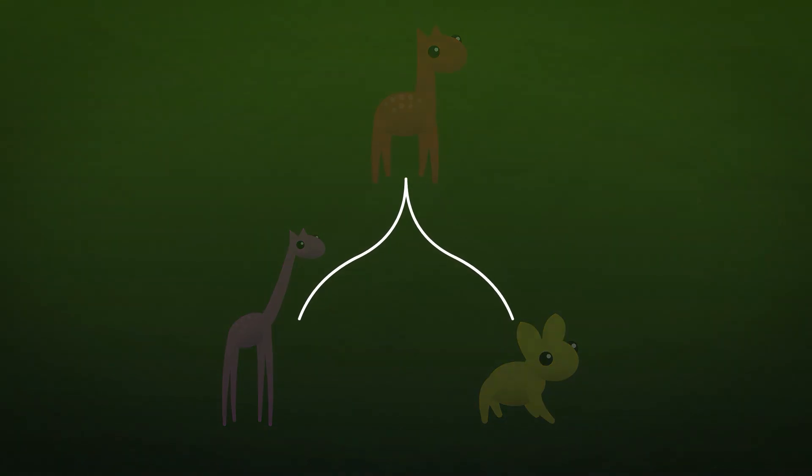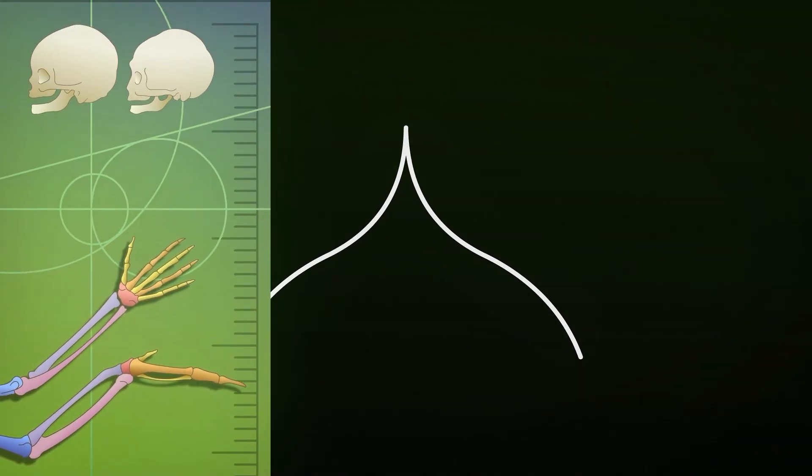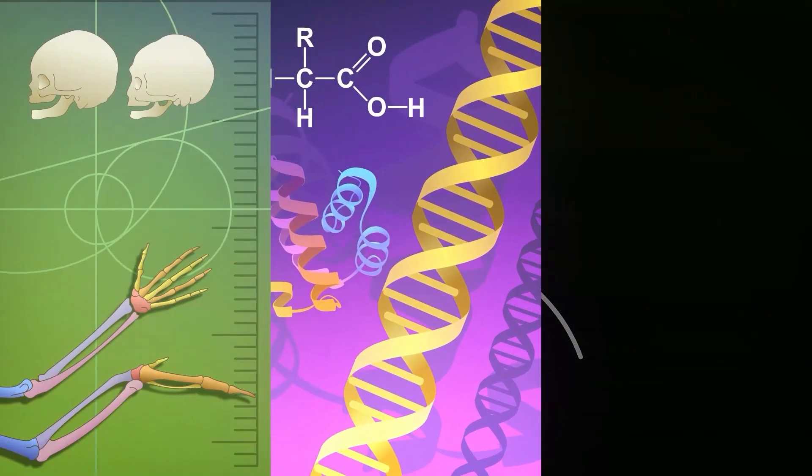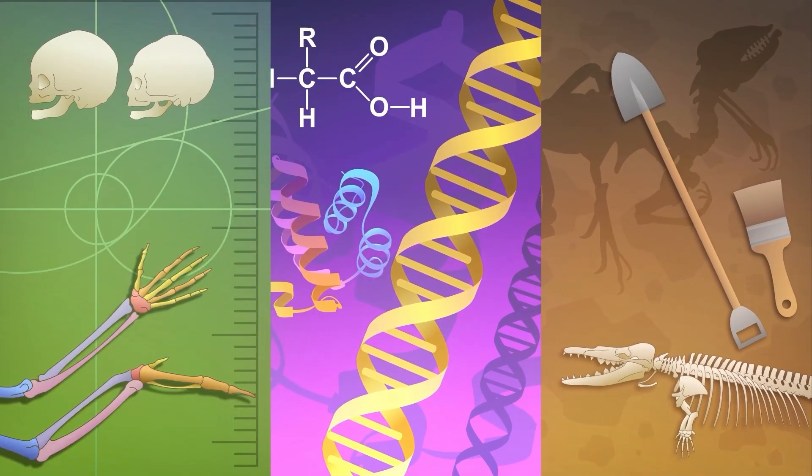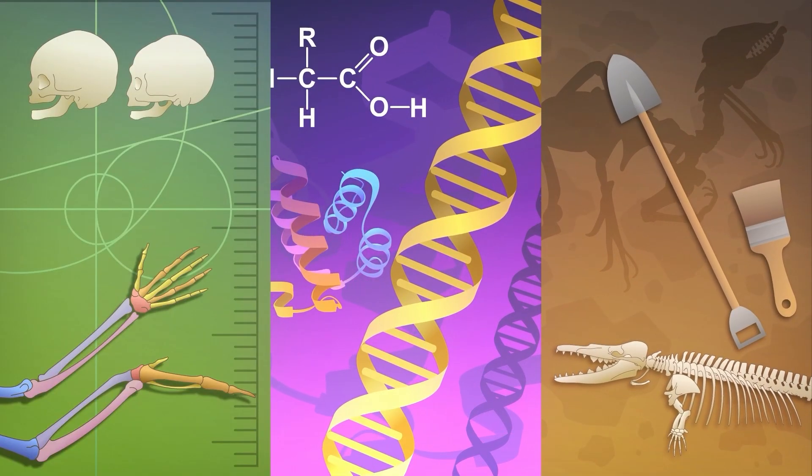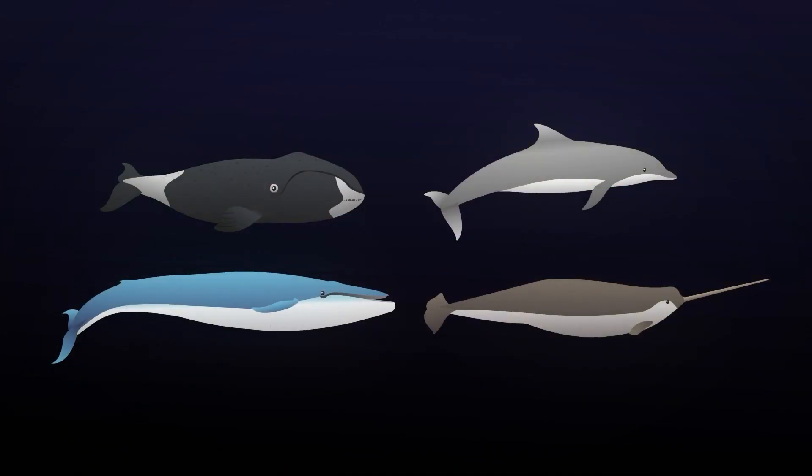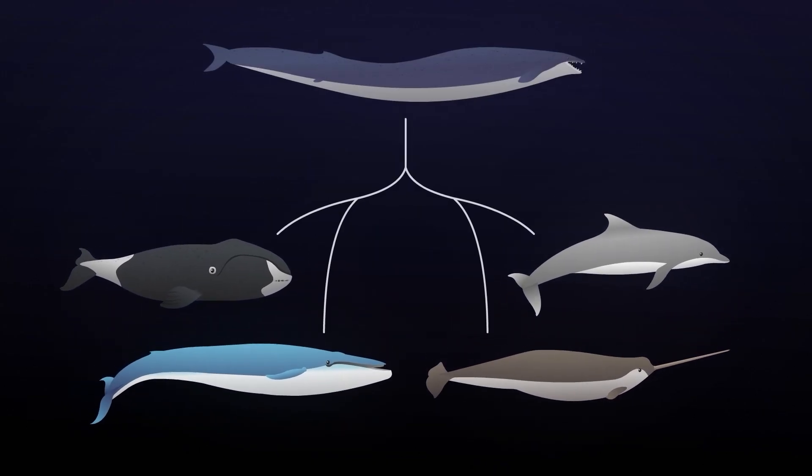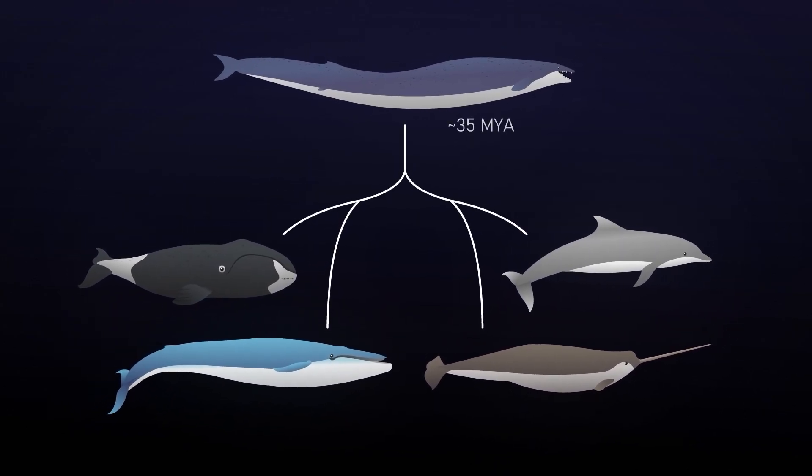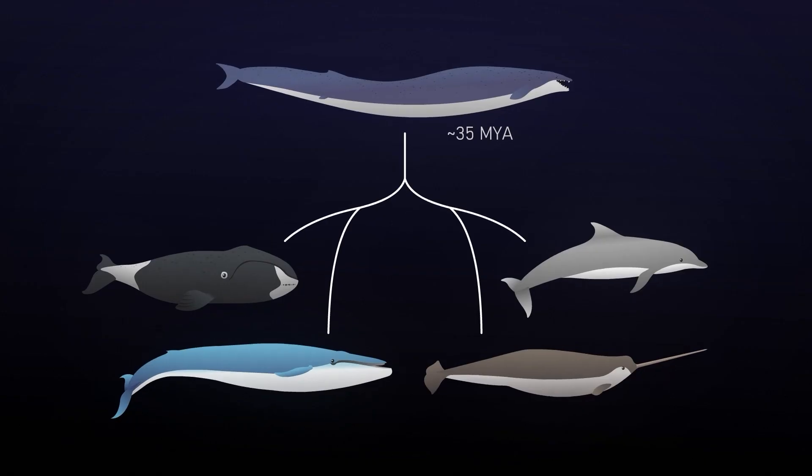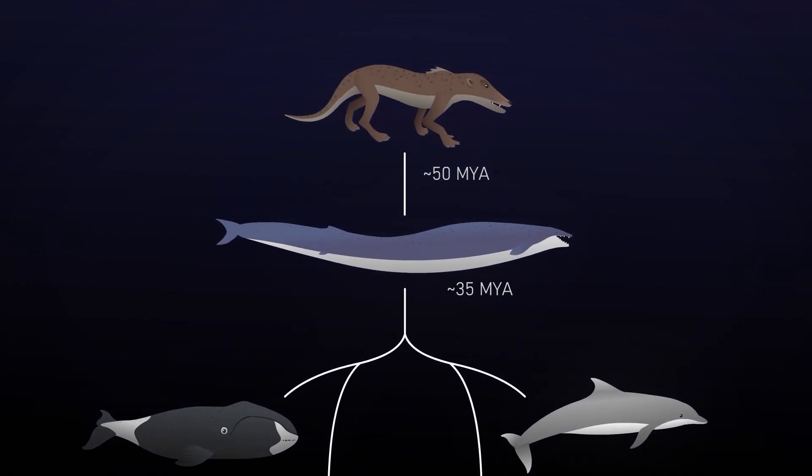Splits such as this and other types are what led to the great variety of species today. With the help of research methods such as anatomical comparison, the study of DNA and protein sequences, and fossil analysis, it is possible to learn about the historical ties between living creatures. For example, the various species of whales and dolphins today have a common ancestor that lived about 35 million years ago, which in turn evolved from land creatures.